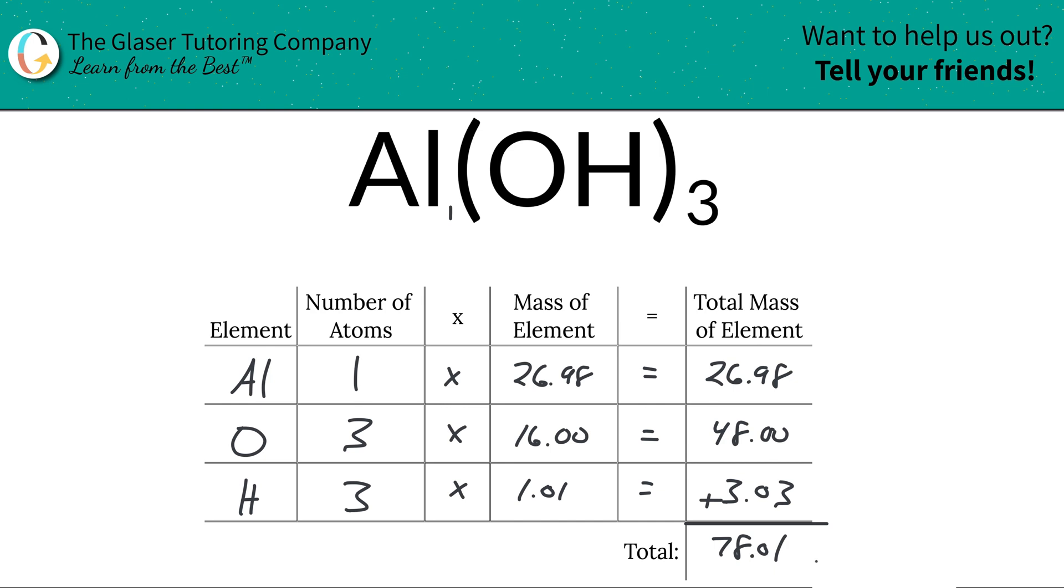Now since we're finding the percent composition of these elements, it doesn't really matter what unit we're talking about here for the molar mass. It could be in grams per mole, it could be in terms of AMU. It does not really matter. I'm going to leave the units out just to keep it clean. But what I'm going to do is I'm going to add one more column to this table to finish it on out.